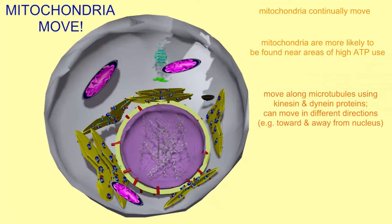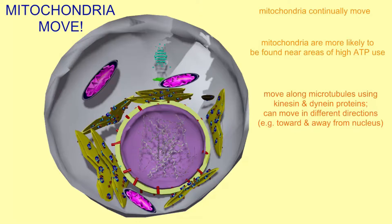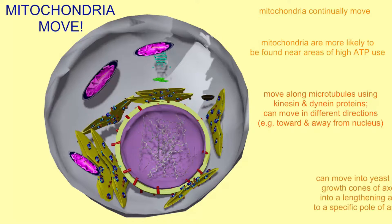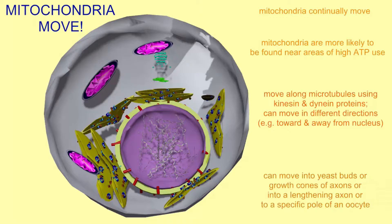They can move in different directions and there are examples where their movement is certainly purposeful. They can move into a budding yeast section, into the growth cones of elongating axons, into a lengthening axon, or to a specific pole of an oocyte.